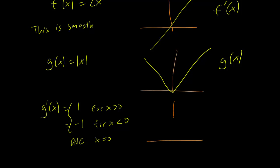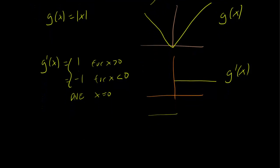So the derivative of g looks like this. And this clearly is not continuous. We had to lift our pencil to draw the graph. And we conclude that gx is not smooth because the derivative is not continuous.